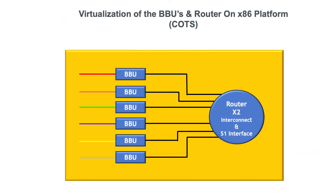But it doesn't stop there, and this is where the cloud part of CRAN comes into play. If you take a look at the diagram, it looks like we have a series of BBUs interconnected to a router. Each one of these BBUs would typically be a separate standalone physical device, and of course a router would also be a separate standalone physical device.